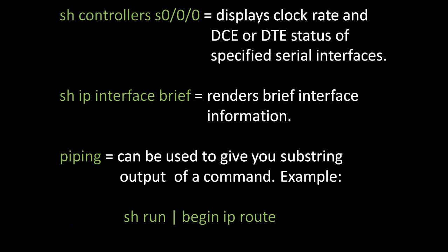The command show controllers s0/0/0 will display the clock rate and DCE or DTE status of the specified serial interface. The command show ip interface brief displays brief interface information. And there is always piping, which can be used to give a substring output of a command — for example, show run | begin ip route would narrow down the output to just the IP routing information.